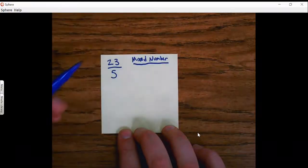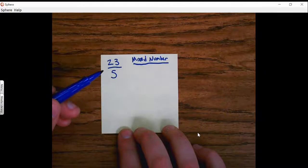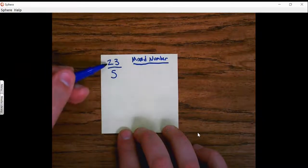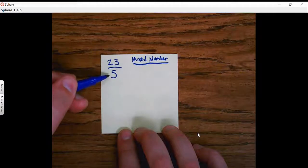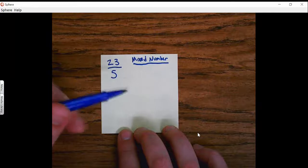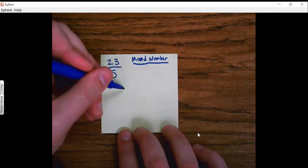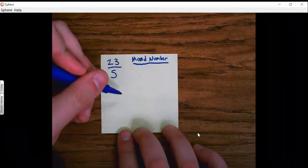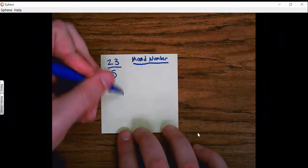I've got my fraction, 23 over 5. Now I know it's an improper fraction because the numerator is larger than the denominator. The easiest way for me to go through this is do some quick division, and that will help me change it from an improper fraction to a mixed number.